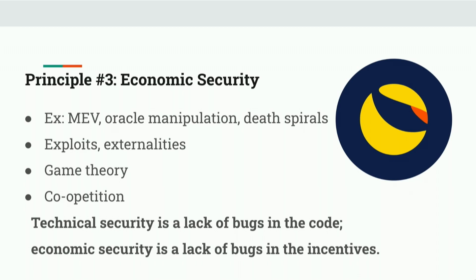Economic security is distinct from technical security in that technical security is a lack of bugs in the code. Economic security is a lack of bugs in the system design, in the incentives, in the game theory. MEV is an example of a system that's not explicitly designed to do what it does — it's being taken advantage of, and that can hurt users in the long run. MEV is an economic security vulnerability in a sense.